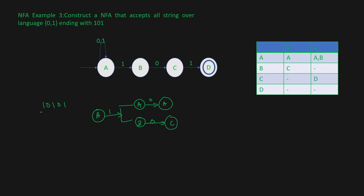We've inserted 1 then 0. Next input is 1. From state A with input 1, we again go to either state A or state B. But in state C, if we give input 1, we reach state D. Now the next input is 0. In state A we get 0 and stay in state A. In state B with input 0, we go to state C. In state D with input 0, we reach nowhere — because that entry is empty. So we remain tracking state D.